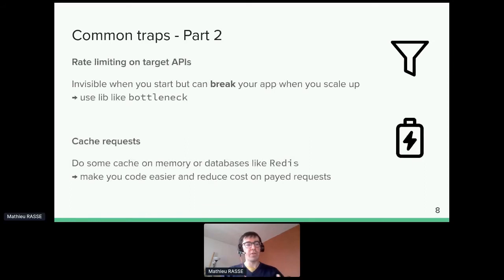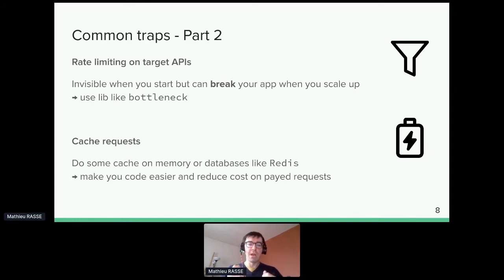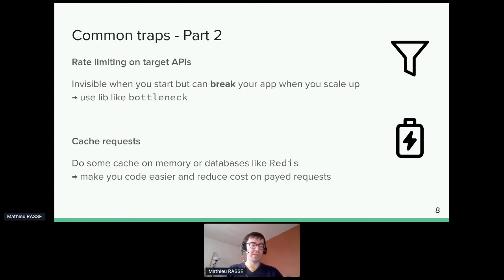Next, rate limiting. Every API now has rate limiting implemented to prevent server overload. Sometimes the limits are very high and irrelevant to your usage, but other times they're very low and you need to account for them. Think about scalability — how many API requests your app will need to make and how that will grow. There are great libraries to manage rate limiting without adding too much complexity to your code.